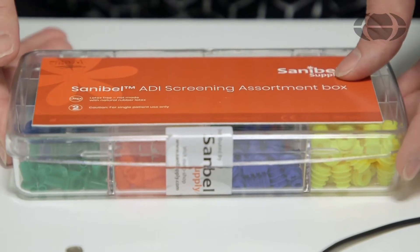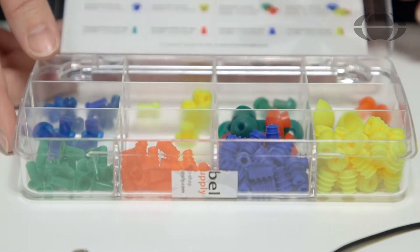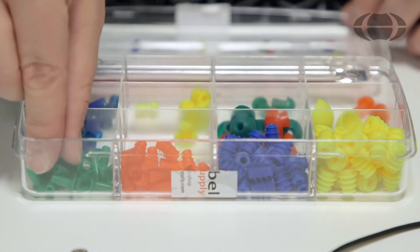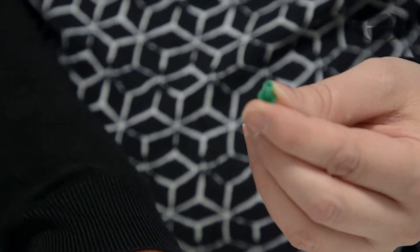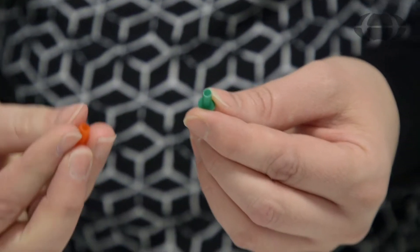Inside the screening box you'll find a variety of ear tip sizes. For newborn hearing screening and testing on young infants, you'll most usually be using the green ear tip or the red flanged ear tip.